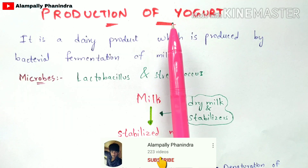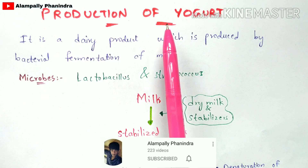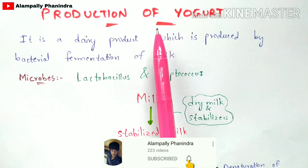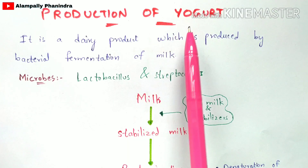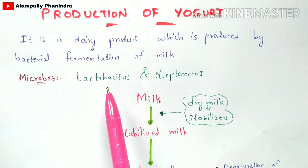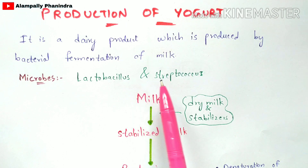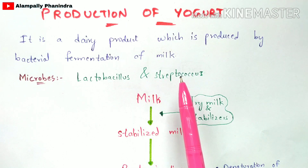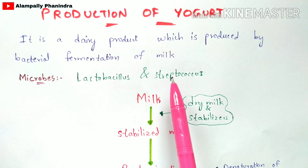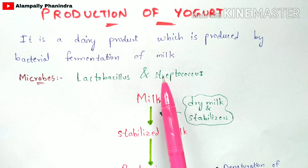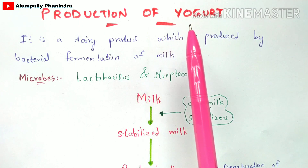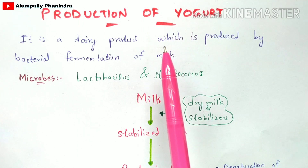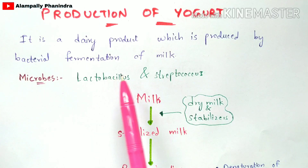Now let us see how the production of yogurt is done in industries. The microorganisms mainly required for the production of yogurt are Lactobacillus as well as Streptococcus. These are the normal microorganisms required for the production of yogurt.